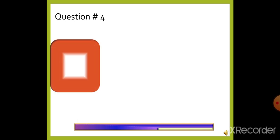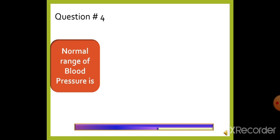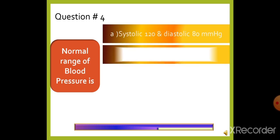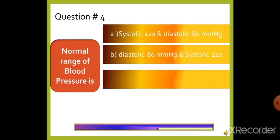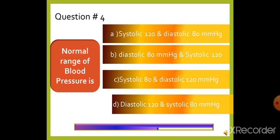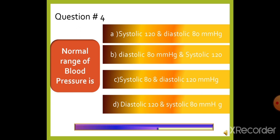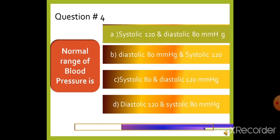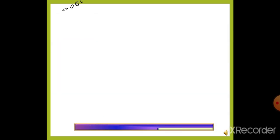Question 4: The normal range of blood pressure is — option A: Systolic 120 and diastolic 80 mmHg, option B: Diastolic 80 and systolic 120 mmHg, option C: Systolic 80 and diastolic 120 mmHg, or option D: Diastolic 120 and systolic 80 mmHg. The right answer is option A, systolic 120 and diastolic 80 mmHg.